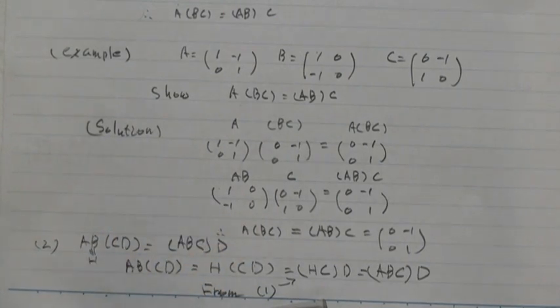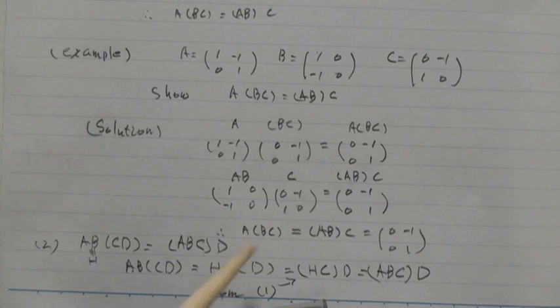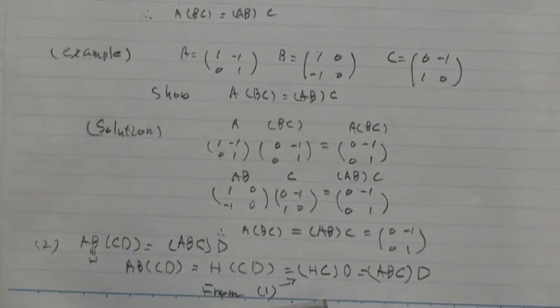And equal, from parenthesis 1, H multiple CD equals HC multiple D. And H equals A, B, then.